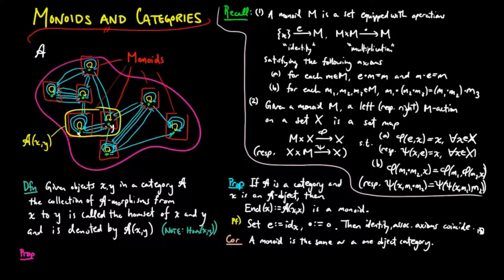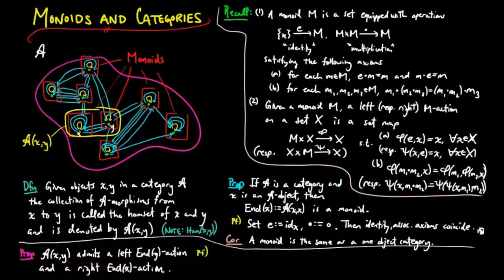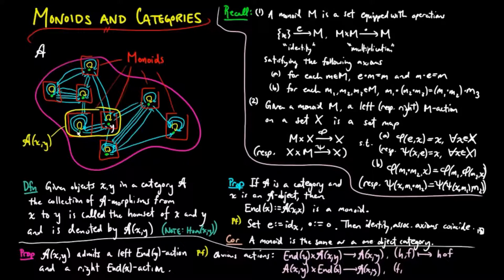We also have that each HOMSET A, X, Y admits a canonical left End Y action and a right End X action. We see that the following actions are given as follows. We define the left End Y action on the HOMSET A, X, Y by assigning a Y endomorphism H and a morphism F from X to Y to the composition HF, and the right End X action by assigning a morphism F from X to Y and an X endomorphism G to FG. It is straightforward to show that these assignments satisfy the axioms for monoid actions.